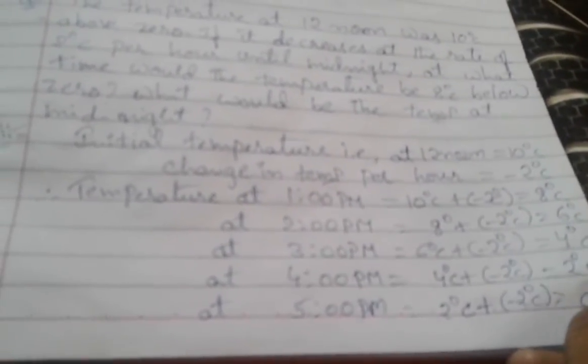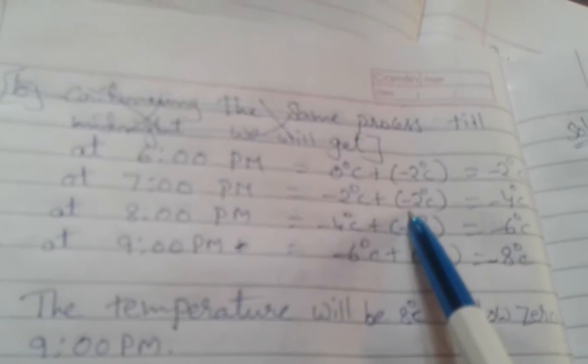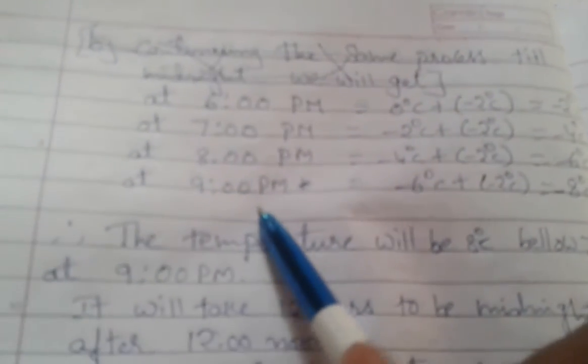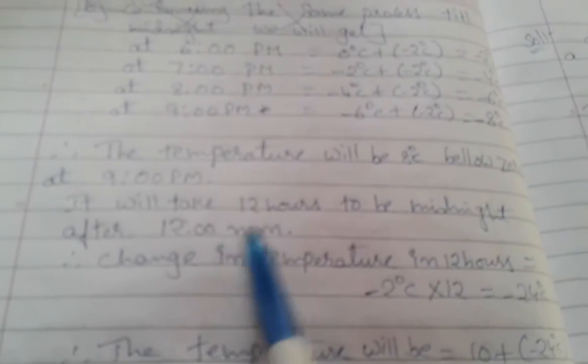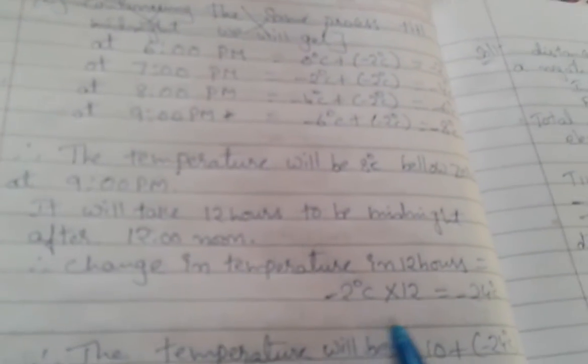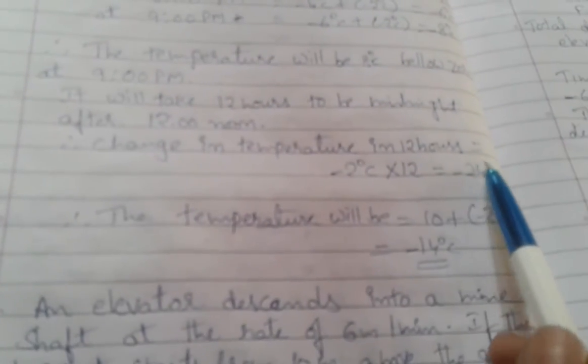Continuing from zero degrees at 5 PM: at 6 o'clock it is minus 2 degrees, at 7 o'clock minus 4 degrees, at 8 o'clock minus 6 degrees, and at 9 PM it reaches minus 8 degrees Celsius — which is 8 degrees below zero. So the temperature reaches minus 8 degrees at 9 PM. For midnight, 12 hours times minus 2 degrees Celsius equals minus 24 degrees Celsius.